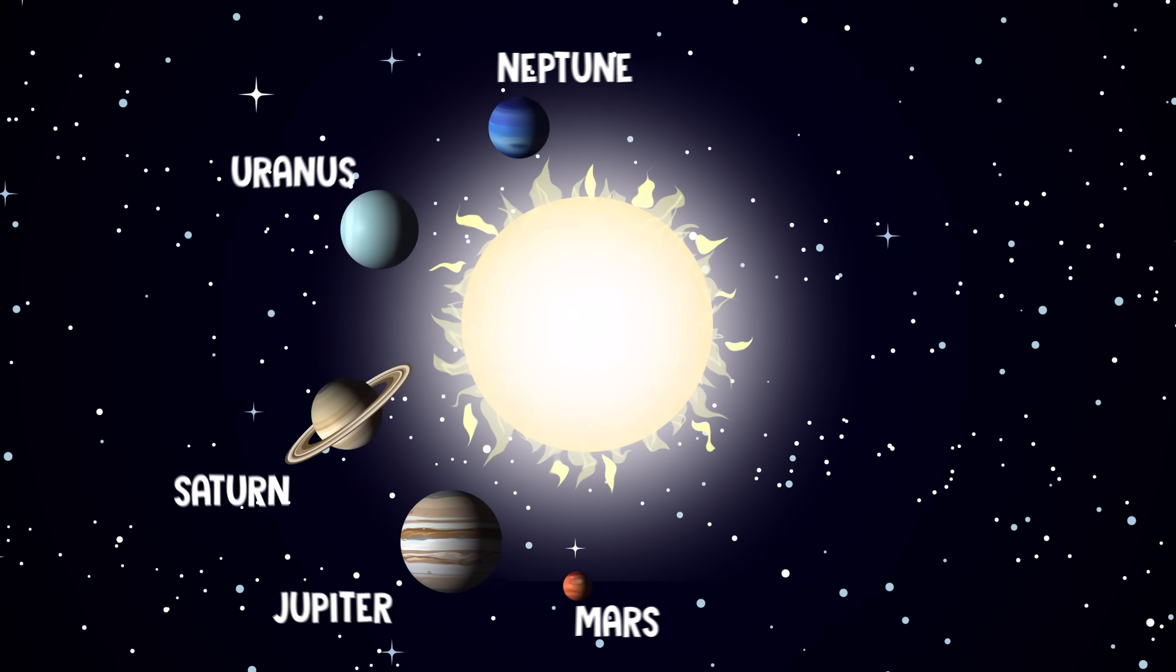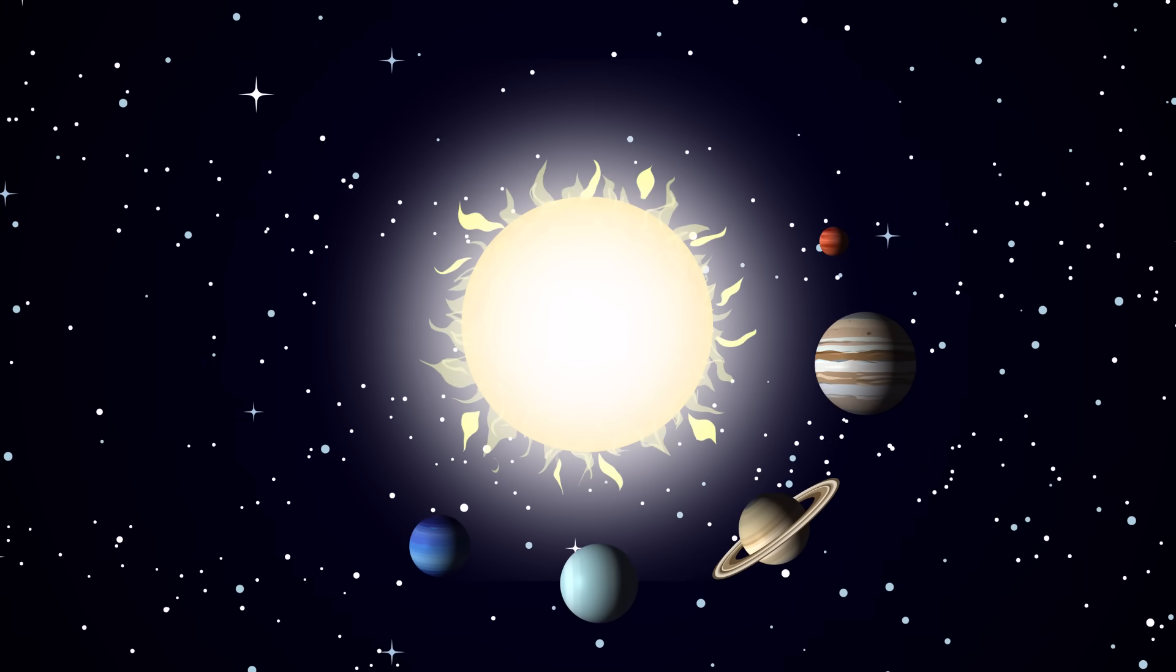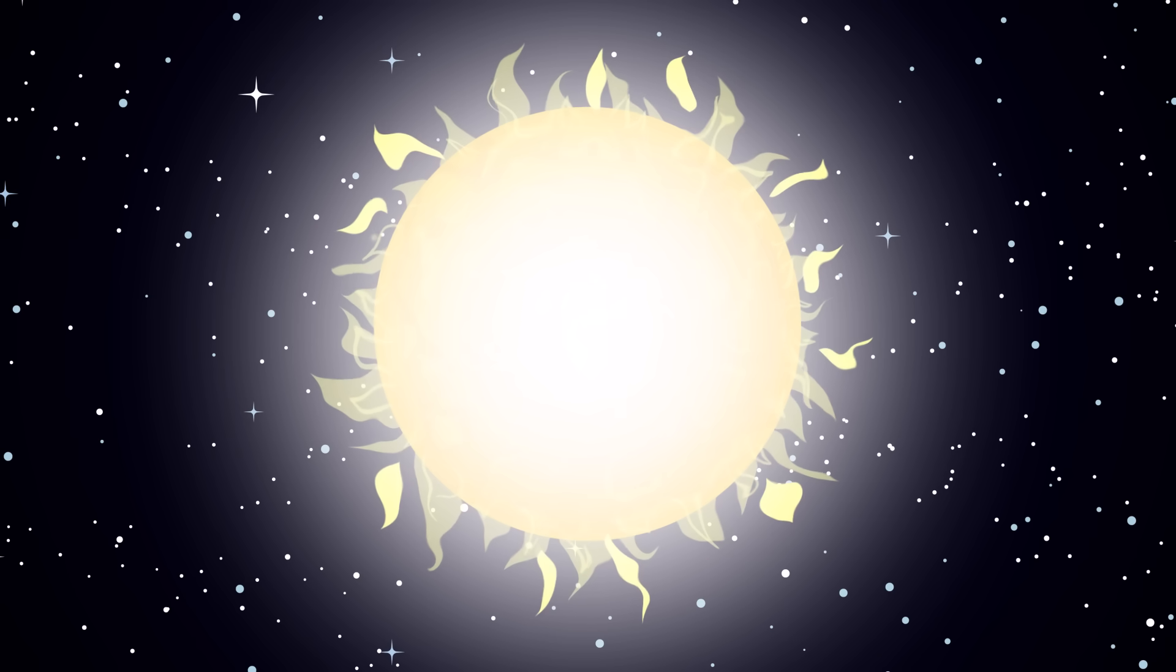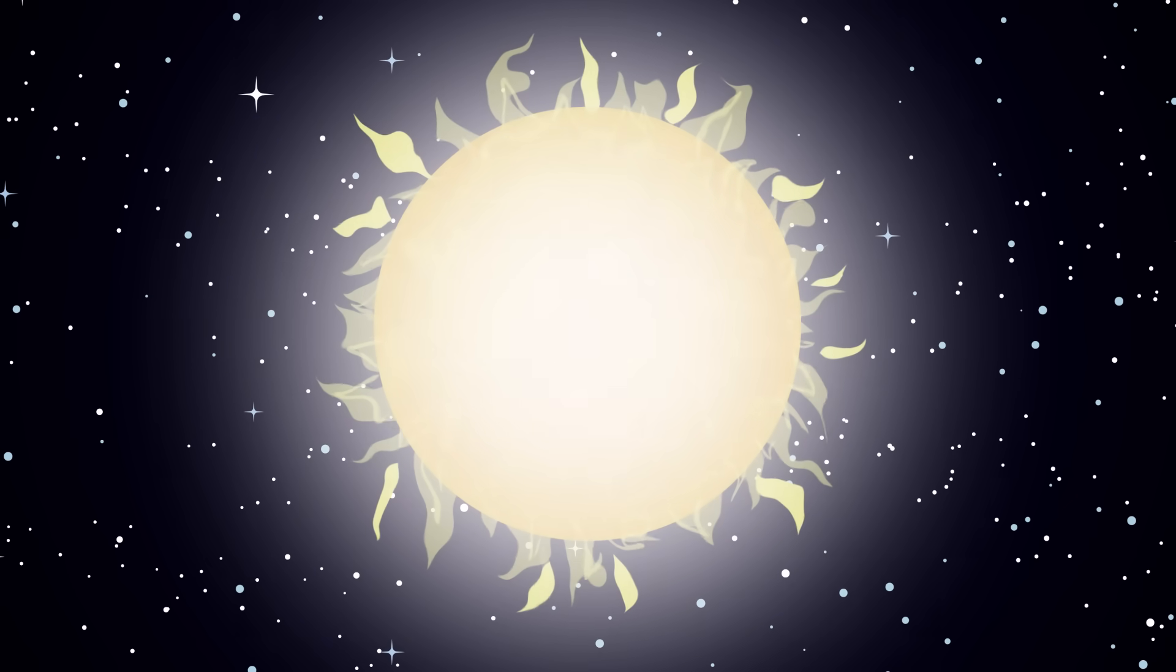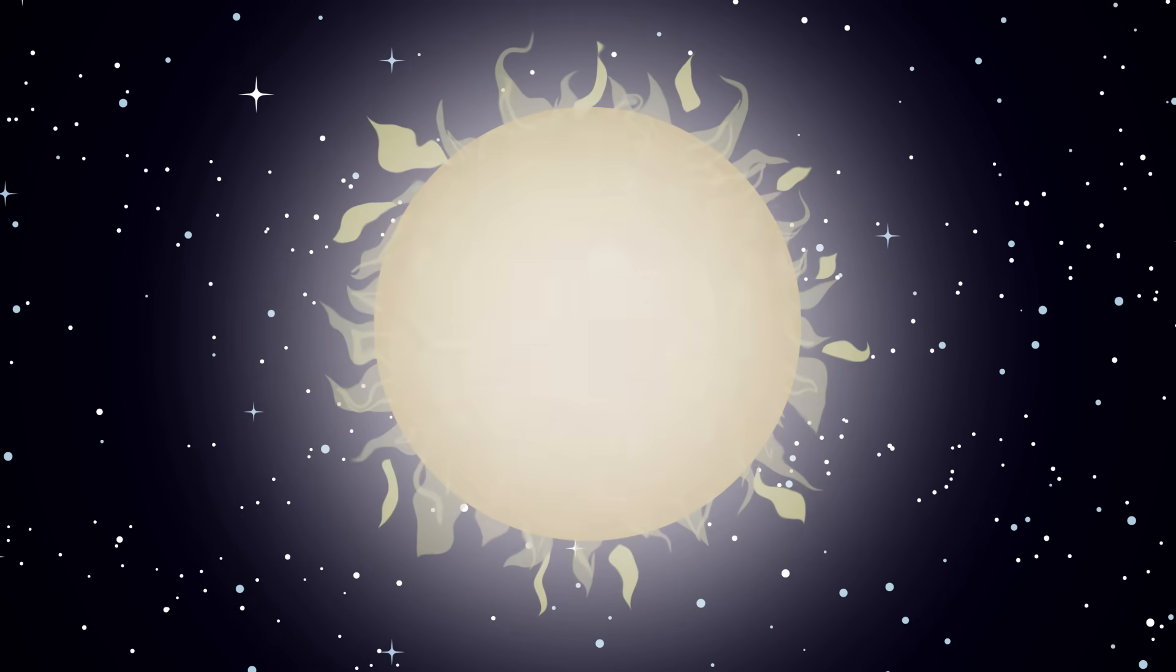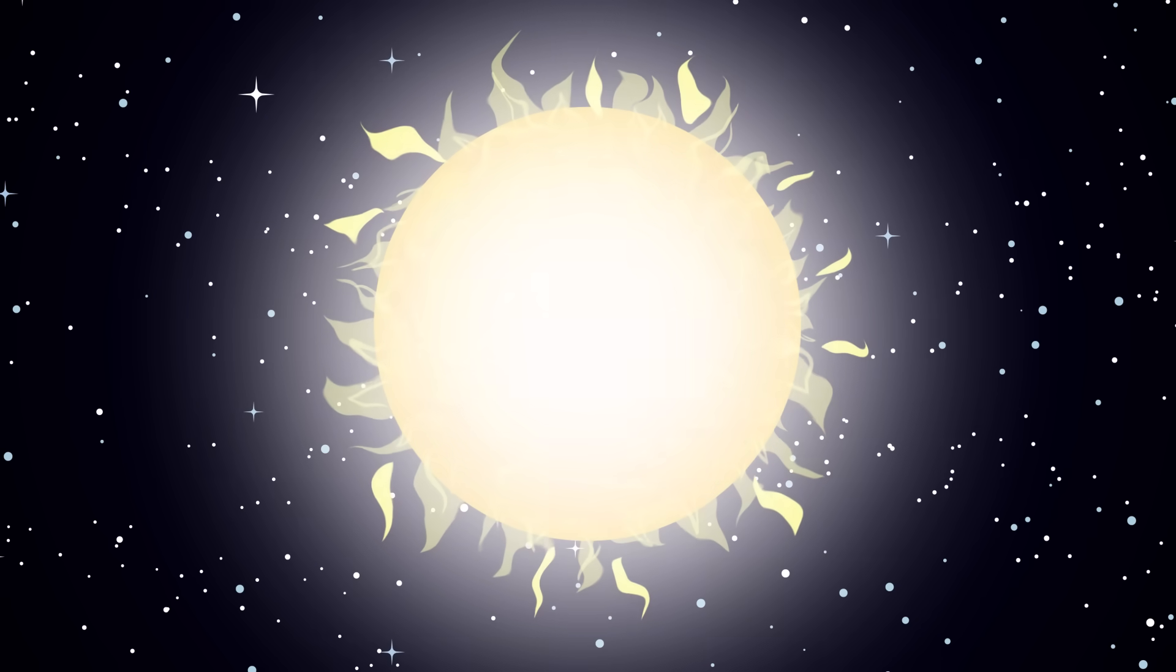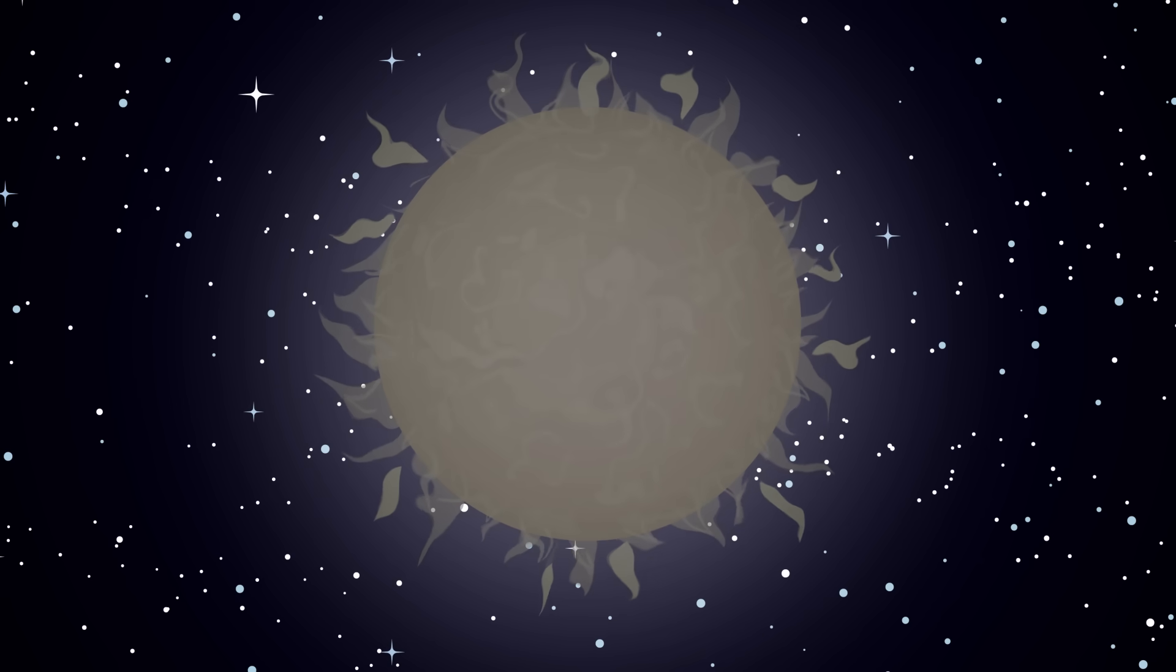But Mars, Jupiter, Saturn, Uranus, and Neptune will keep spinning around the sun. Since white dwarfs are so tiny compared to your average star, they don't give off very much light and continue to slowly get dimmer and colder over billions of years, eventually becoming so dark they give off almost no light at all.